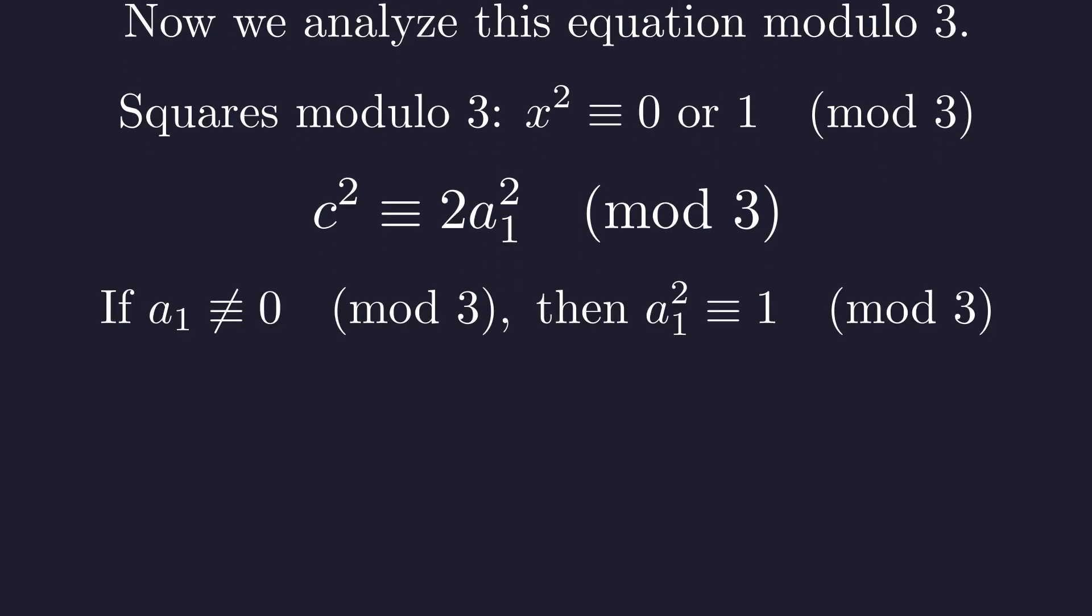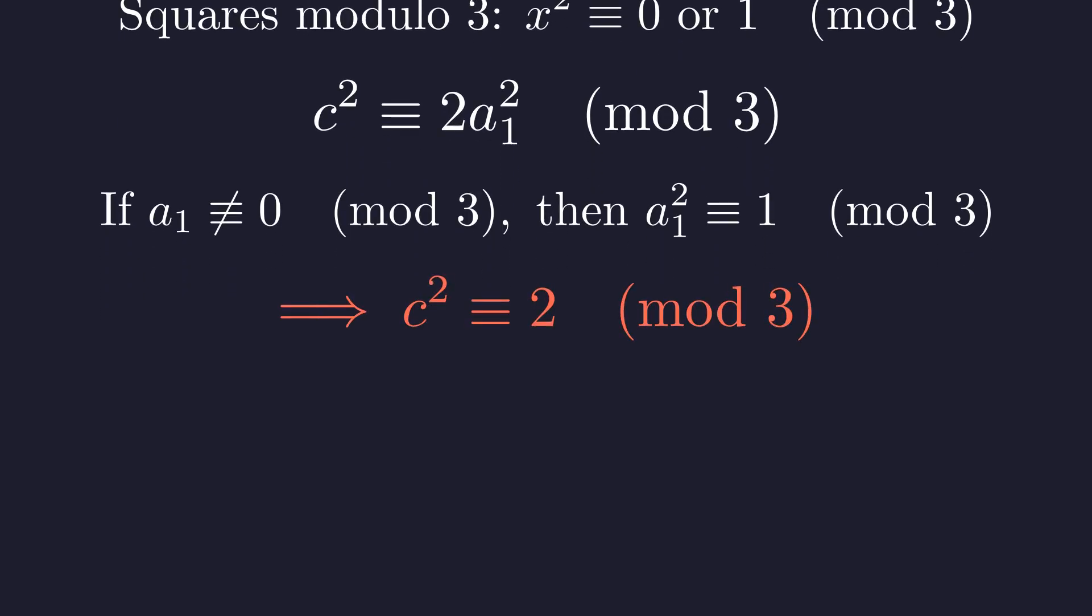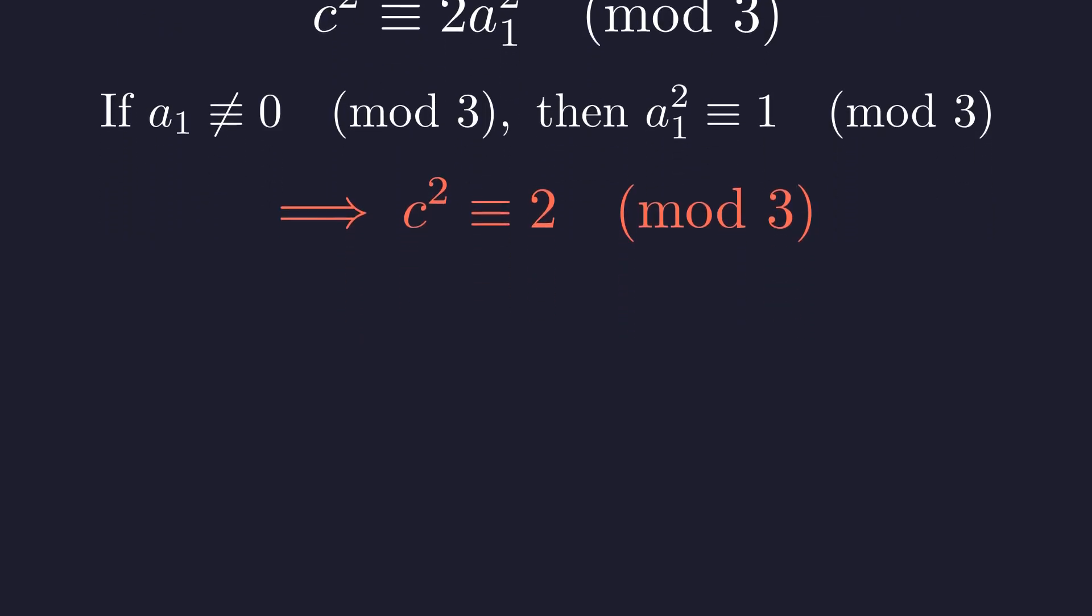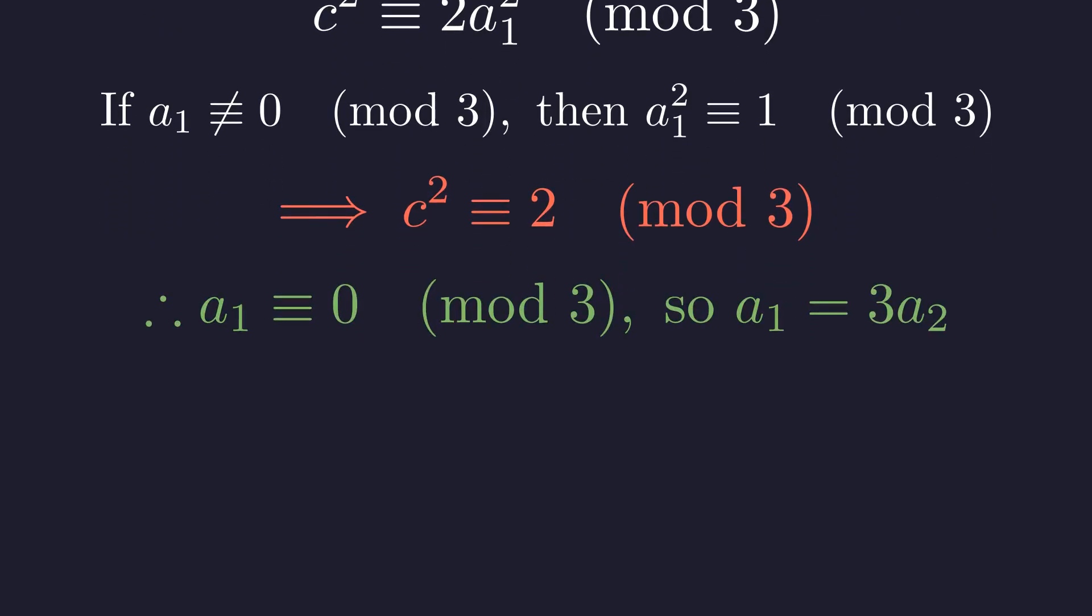If a₁ is not divisible by three, then a₁ squared is congruent to one modulo three. This would make c squared congruent to two modulo three. But two is not a quadratic residue modulo three—no square can equal two modulo three. This is impossible. Therefore, a₁ must be divisible by three.